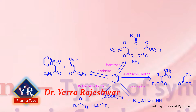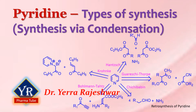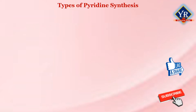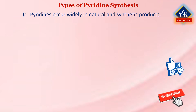In this lesson, we shall learn the various types of pyridine synthesis and we will try to understand the first type of pyridine synthesis via condensation reactions. Pyridines occur widely in natural and synthetic products, so there is a wide interest in routes for their synthesis. There are also many ways of achieving the synthesis of a pyridine ring.